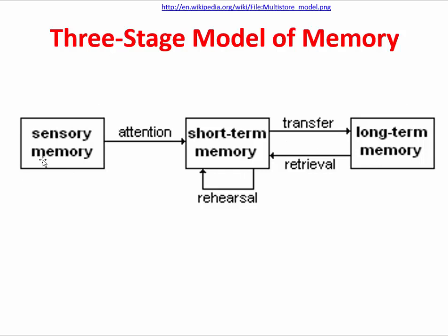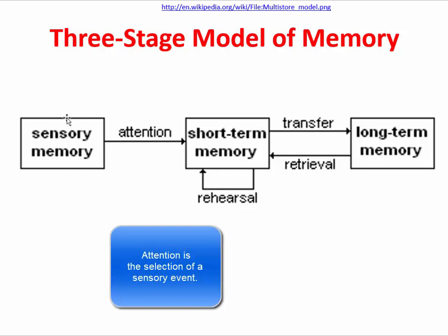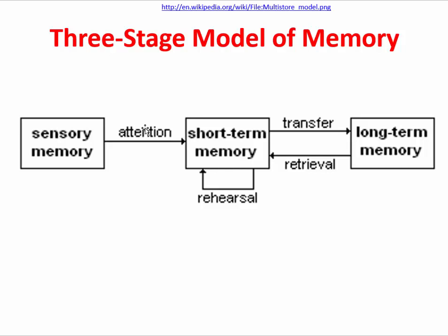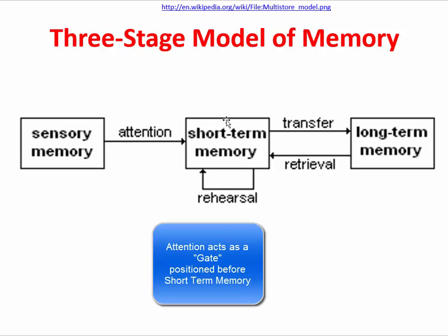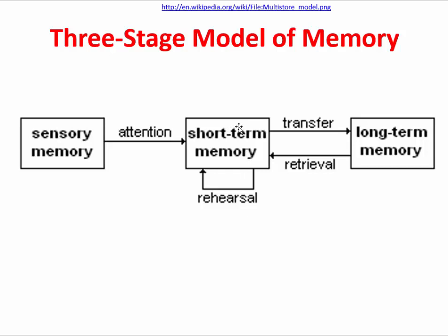Importantly, the link from sensory memory to short-term memory is gated by attention. We've previously defined attention as the selection of a sensory event. Some things will make it into short-term memory and some won't, based on attention — only those that have been attended will make it past this gate into short-term memory. Within short-term memory, we might begin rehearsing, for example saying a phone number to ourselves many times, either silently or aloud, as we try to hold onto it before eventually transferring it into long-term memory. We also use the phrases short-term memory and working memory interchangeably.